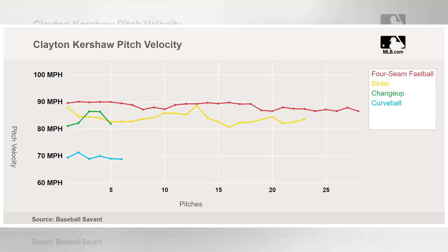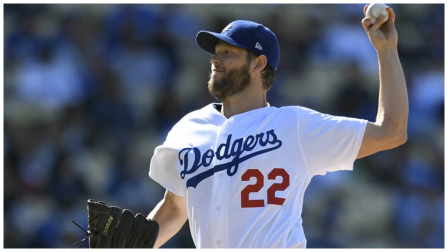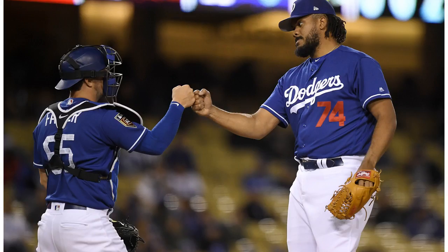Kershaw has struggled with injury since his last peak season in 2015, when he threw 232.2 innings with a 2.13 ERA. He missed significant time in both 2016 and 2017, and his peripherals have been slowly creeping upward ever since: his strikeout rates have dropped, his walk rates are up, and after giving up a scant 0.5 HR/9 in his career up to 2016, since 2017 he's giving up home runs at more than double the rate at 1.2 HR/9.